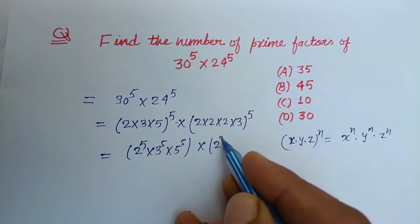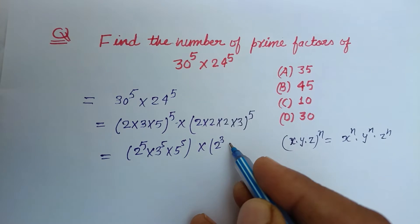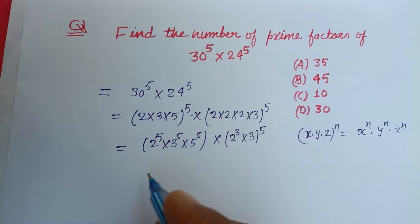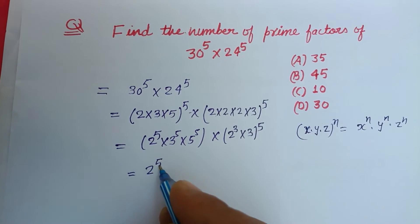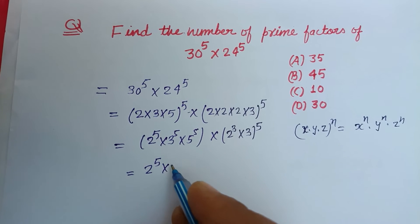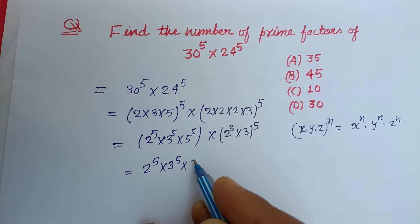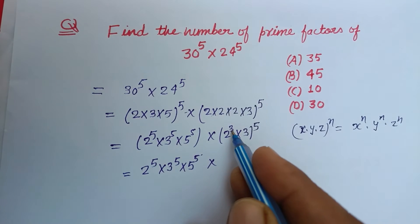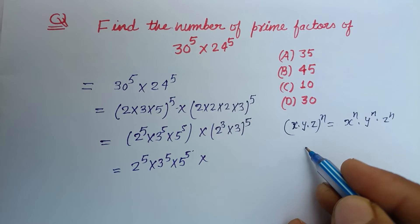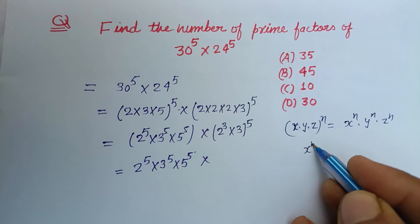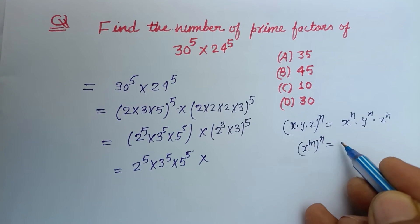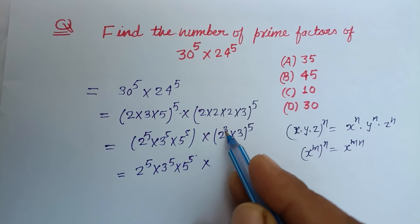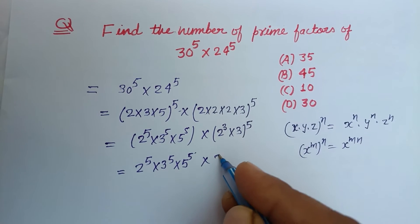Now we apply the rule (xᵐ)ⁿ = xᵐⁿ. So (2³)⁵ = 2¹⁵. This gives us 2⁵ · 3⁵ · 5⁵ from 30⁵, and 2¹⁵ · 3⁵ from 24⁵.